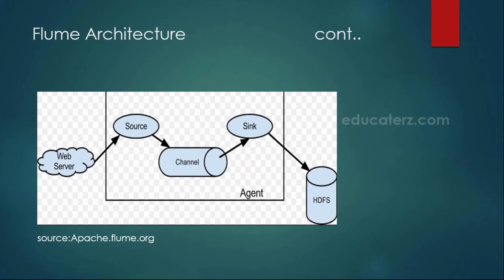If you look closely at the Flume agent, you will have a source, channel, and sink. These are the three important components as part of your Flume agent. On the left-hand side there is a web server — assume your web server is continuously generating log files and our goal is to load that into your Hadoop Distributed File System. Internally, it uses the Flume agent consisting of the source, channel, and sink.